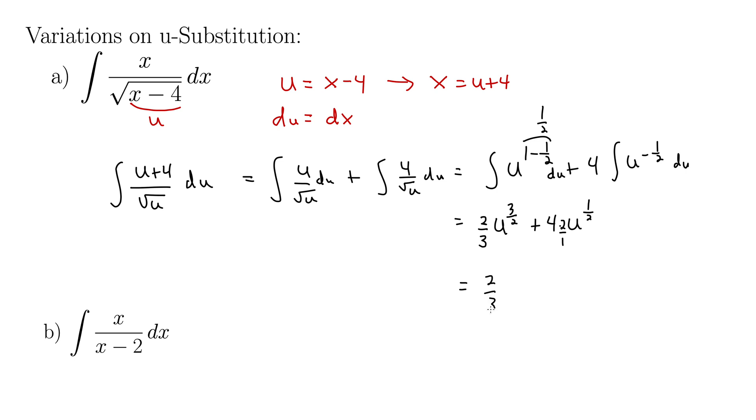So now we're in business: 2 thirds u to the 3 halves plus 8 rad u. We'll change the 1 half back to rad. And finally we back substitute, remembering that u is actually x minus 4. And I just realized I forgot my plus c, so easy to forget that plus c. And our integral is finally 2 thirds times x minus 4 to the 3 halves plus 8 square root of x minus 4 plus c.